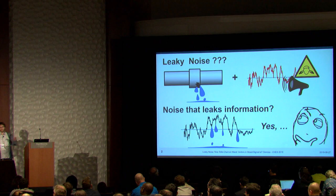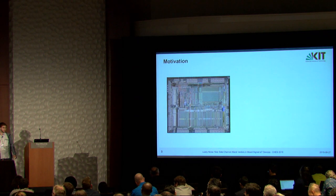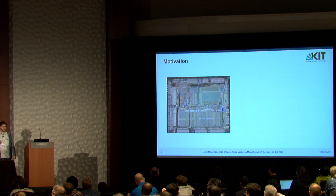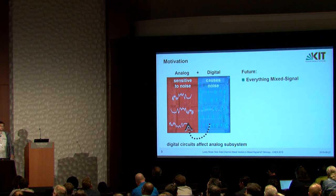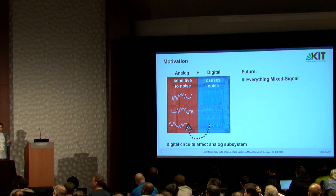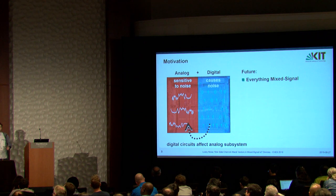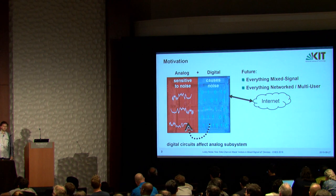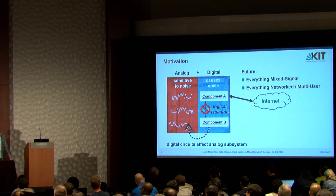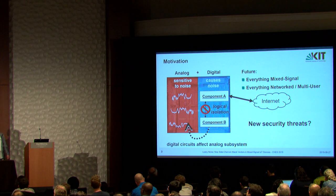Every side-channel attack has some noisy data. But nowadays, most chips are actually mixed-signal chips. If we look at a modern chip, we have analog and digital components where the digital part causes noise, while the analog part is sensitive to noise. In the future, we consider that all chips will be mixed-signal. These small embedded IoT devices combine everything in a single package, which is cost-effective, and all these chips can be networked, multi-user, and connected to the Internet.